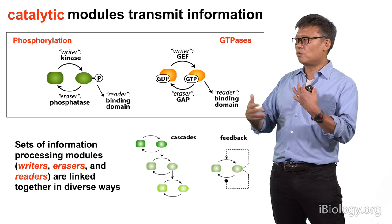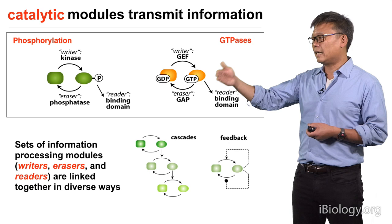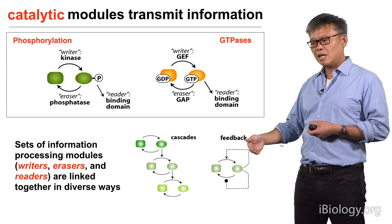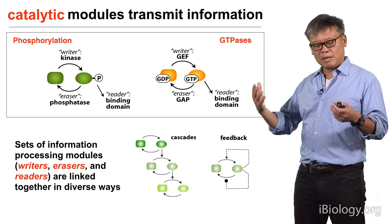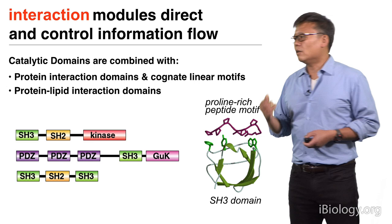These sorts of writer and eraser enzymes are often put together. You can get cascades or other network linkages where, for example, one phosphorylation event will activate another enzyme, and that will in turn activate another enzyme, leading to the sorts of networks and circuits that we see in cells.